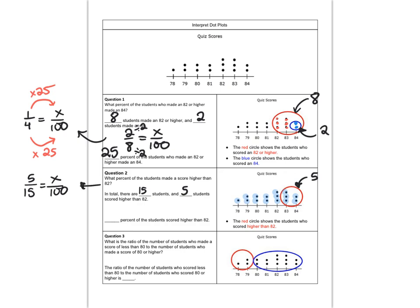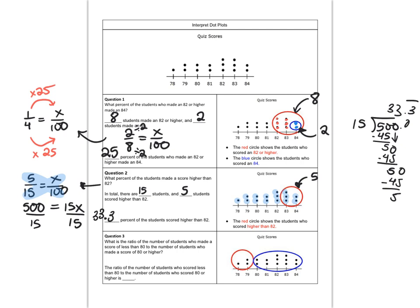So in total there are 15 students and 5 students scored higher than 82. So we can follow the same process we used in question 1 to figure out what percentage that would be. Last time I used a multiplicative relationship in my proportion to solve it and this time I'm just gonna use my cross products. Using my cross products 100 times 5 is 500 and 15 times x is 15x. To figure out what x is I need to divide both sides by 15. So you can see over here I have 33.3 repeating. So I'm gonna say 33.3% and put my bar over my three to indicate that that is repeating forever.